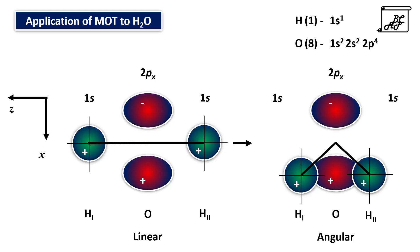Along with this we also have to consider the 2s orbital of the central oxygen atom. We must remember that here there are total three orbitals which are combining: the group orbital ψ₁, the 2s orbital of the central oxygen atom, and the 2px orbital of the central oxygen atom. Therefore, when three orbitals combine according to molecular orbital theory, three molecular orbitals will be formed.